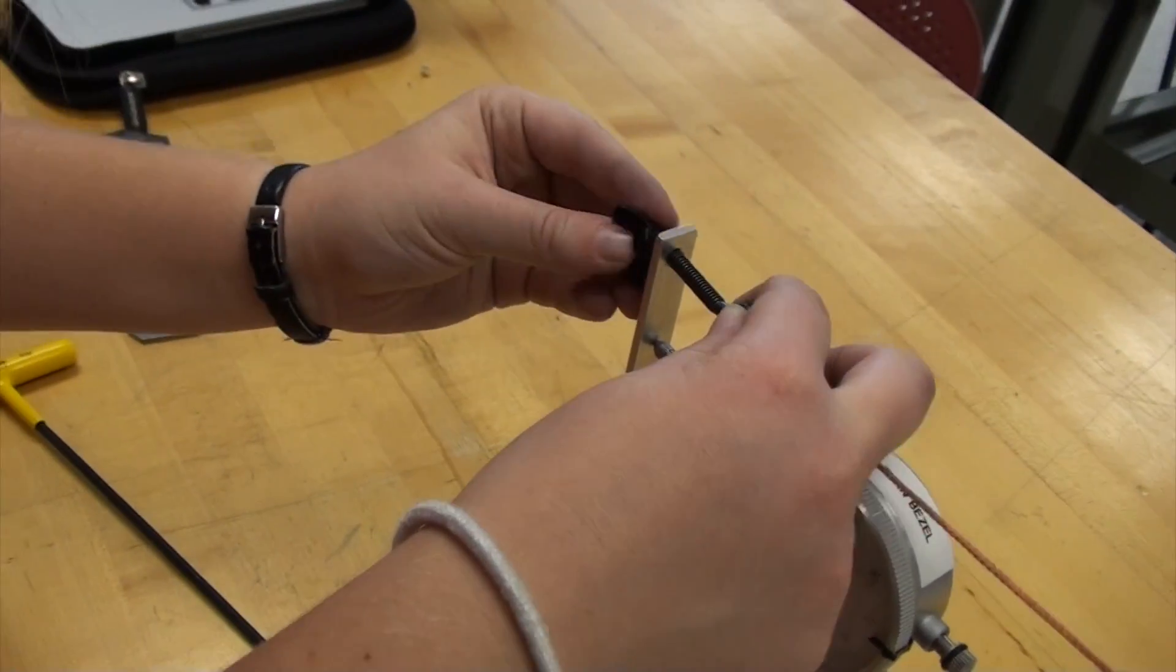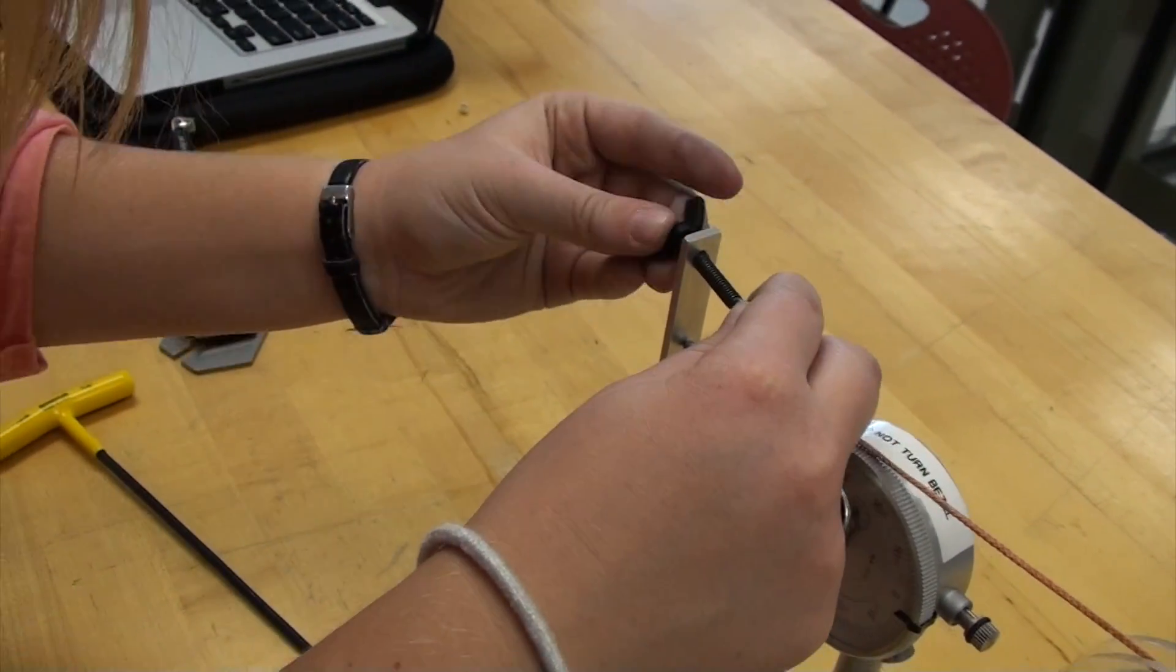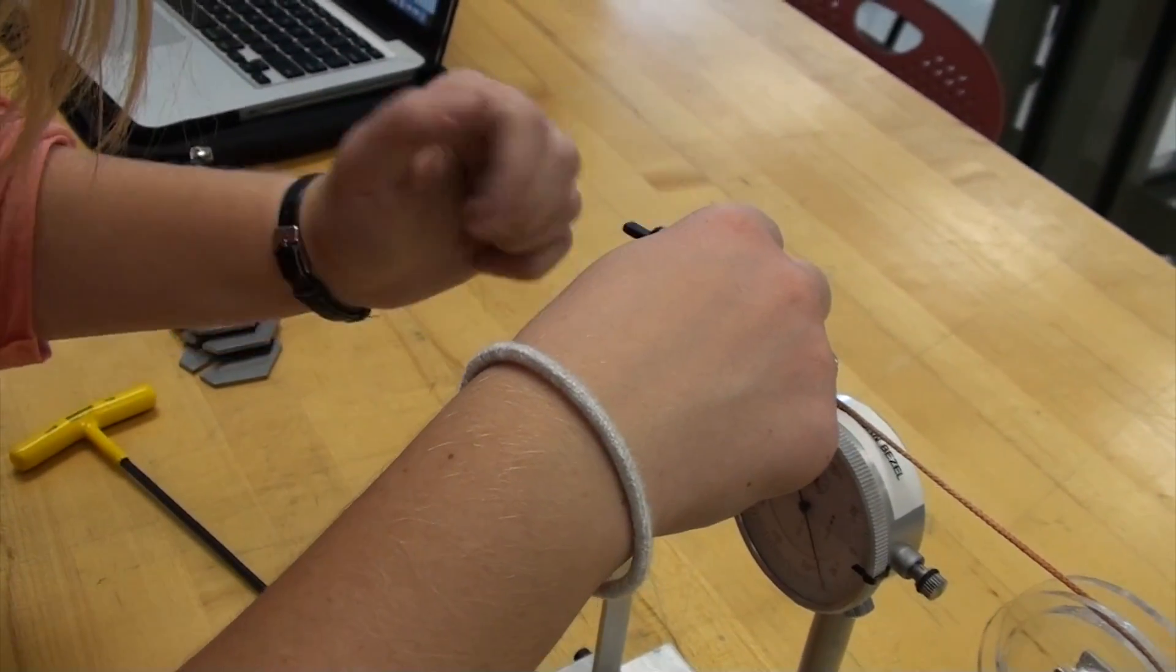Place the bolt that is attached to the string through the hole in the beam attaching the weight holder to the beam.